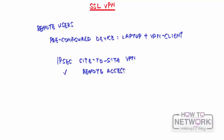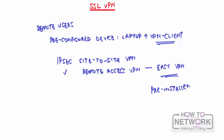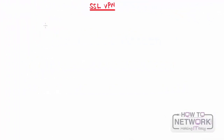Cisco's implementation of IPSec remote access uses Easy VPN. Easy VPN requires a VPN client which has to be pre-installed and pre-configured. But it's not always the case where users have access to such devices, and this is where SSL VPN comes in - users can open a secure VPN connection from their web browser.